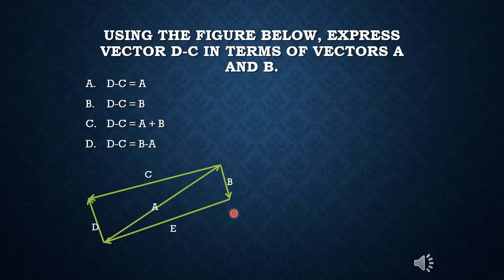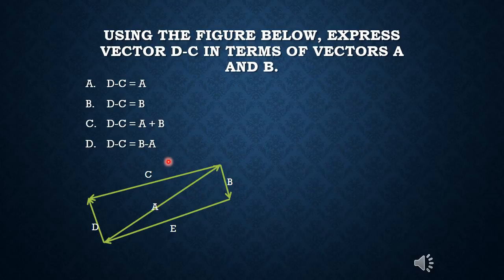Same figure — and I apologize again for not putting arrows on everything. In this case we have vector D, which goes here to here, and vector C, which goes here to here. You want to express D minus C in terms of vectors A — which goes here to here — and B. It doesn't have to be in terms of both A and B; it can be one or the other. How would you write an equation so that D minus C equals something involving A and/or B?